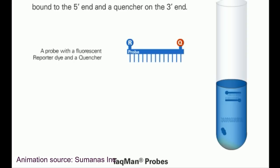The TaqMan probe is an oligonucleotide that contains a fluorescent reporter bound to the 5' end and the quencher bound to the 3' end.